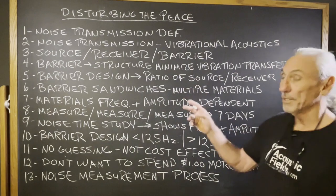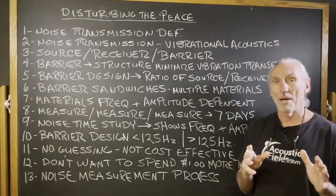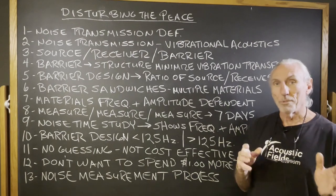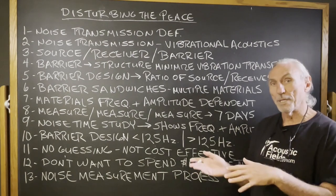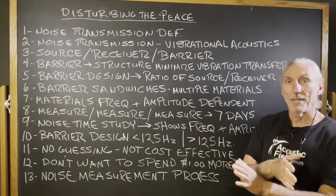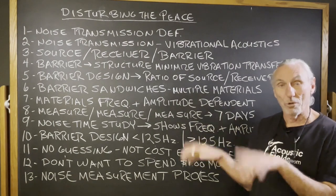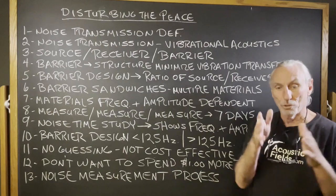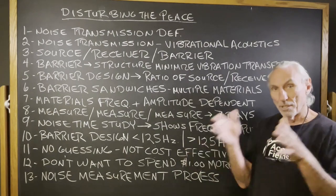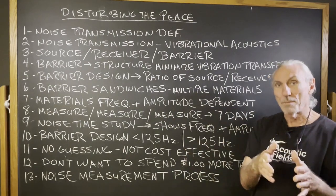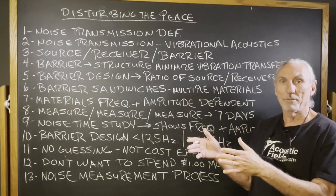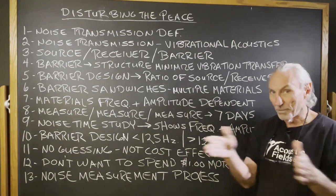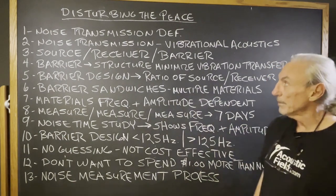Noise transmission — that is sound or noise leaving the room and disturbing others. Or the flip side of that is sound from others, noise if you will, from them bothering you. So it's source, receiver. The source is making the noise, you're the receiver. That's called noise transmission — the transmission of that between source and receiver.